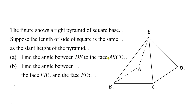In this question, the figure shows a right pyramid with a square base. The length of the side of the square is the same as the slant height of the pyramid. Part A: find the angle between DE and face ABCD. Part B: find the angle between face EBC and face EDC. Since ABCD is a square and the slant height equals the side length, each lateral face is an equilateral triangle — EBC, EDC, EAB, and EAD are all equilateral triangles.